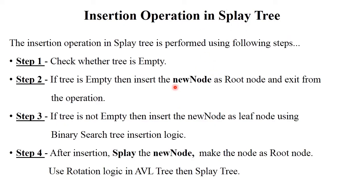Now insertion operation in splay tree. First step: check whether the tree is empty. If tree is empty, insert the new node and that node becomes the root node. If tree is not empty, insert the new node using binary search tree insertion logic. After insertion, splay or rotation is performed — left-left, right-right, left-right, or right-left rotation. After rotation is performed, the inserted node becomes root node of the splay tree.